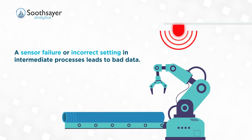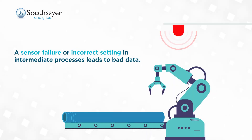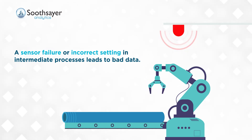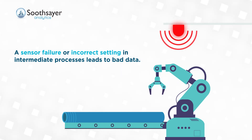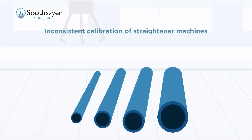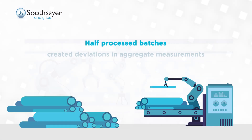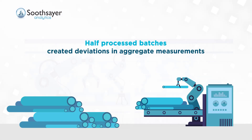Most of the information is captured through various sensors. Hence, sensor failure or incorrect settings in intermediate processes leads to bad data. Moreover, inconsistent calibration of straightener machines impacted data distribution. Half-processed batches created deviations in aggregate measurements pre- and post-processing.